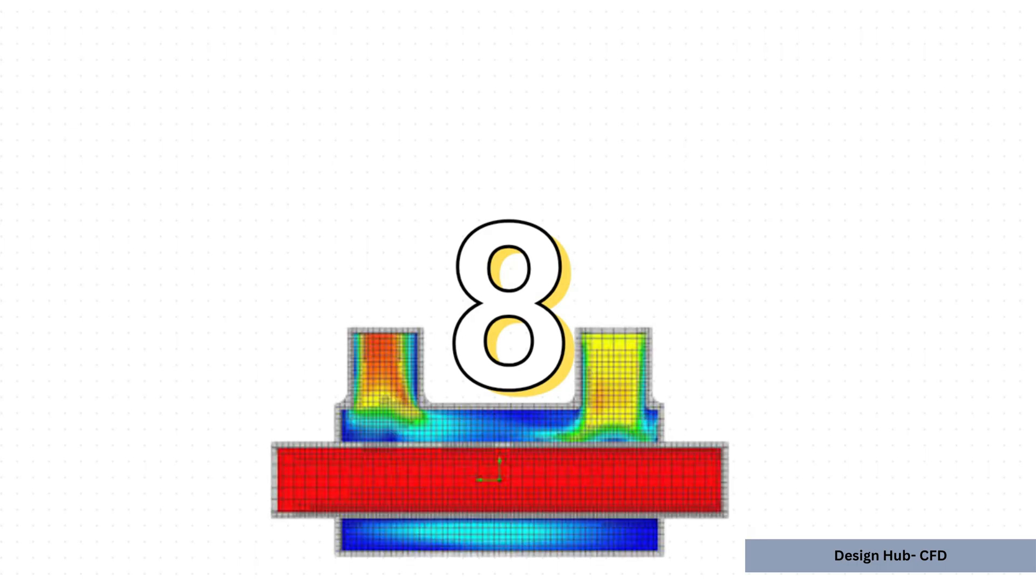So how does this refinement actually work? Well, it follows one simple but really powerful rule. Every single time you bump up the refinement level by one, a single parent cell splits into these eight smaller child cells. It's this exponential growth that lets us zoom in and capture incredibly fine details in our geometry.